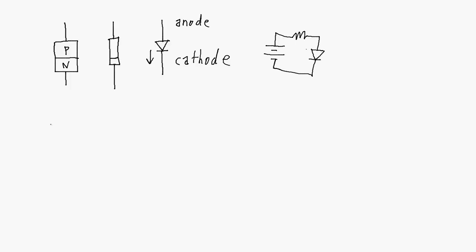Diodes are a non-linear device, meaning that the relationship between voltage and current is not linear in a diode. Before I go into what that non-linear relationship is, let's just look first at what a linear relationship is. The device that you should know about that exhibits a linear relationship between voltage and current is a simple resistor.